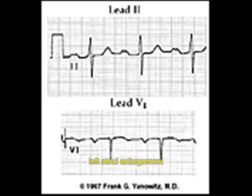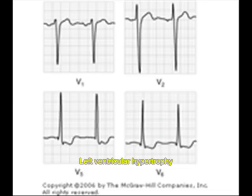Now let us see left ventricular hypertrophy. In left ventricular hypertrophy you can see big R and S waves. In fact, if you combine S and R it will be more than 35 millimeters. So whenever you see big S and R waves you should suspect left ventricular hypertrophy.